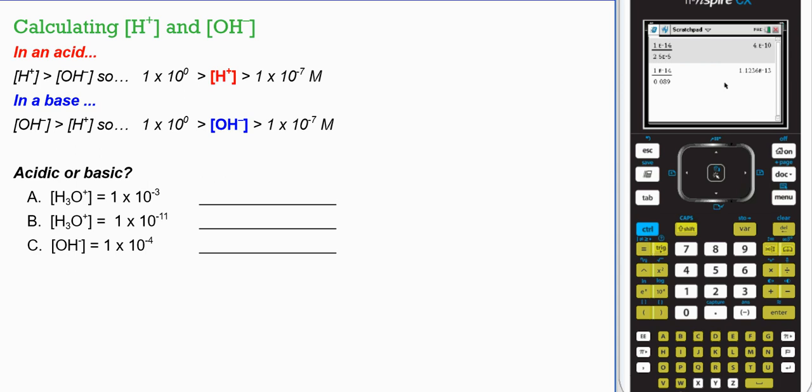So calculating hydrogen and hydroxide concentration in an acid, hydrogen ions are always greater than hydroxide concentration. So if my hydrogen ion concentration is between these two values, 1 times 10 to the 0 to 1 to the negative 7th, it's going to be acidic.